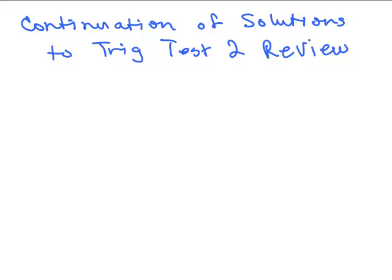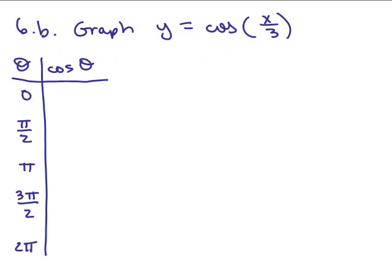This is a continuation of solutions to the trig test 2 review. For 6B we're asked to graph Y equals the cosine of X over 3.